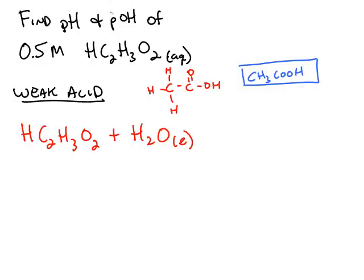Here's a problem where we're asked to find the pH and pOH of a 0.5 molar solution of acetic acid, HC2H3O2. Acetic acid is often written CH3COOH because it has this Lewis structure.